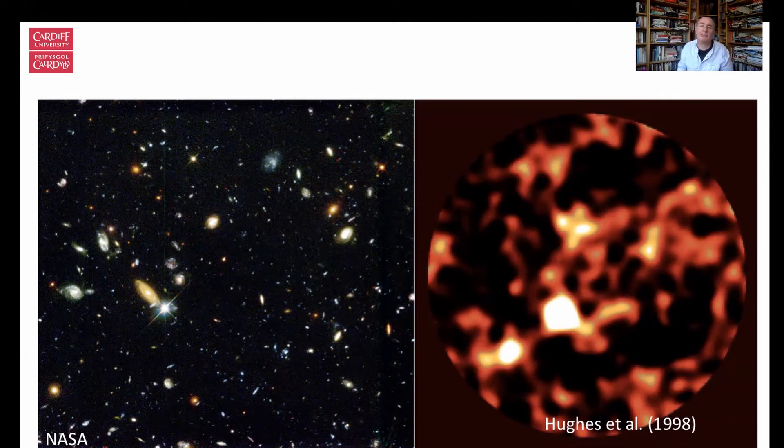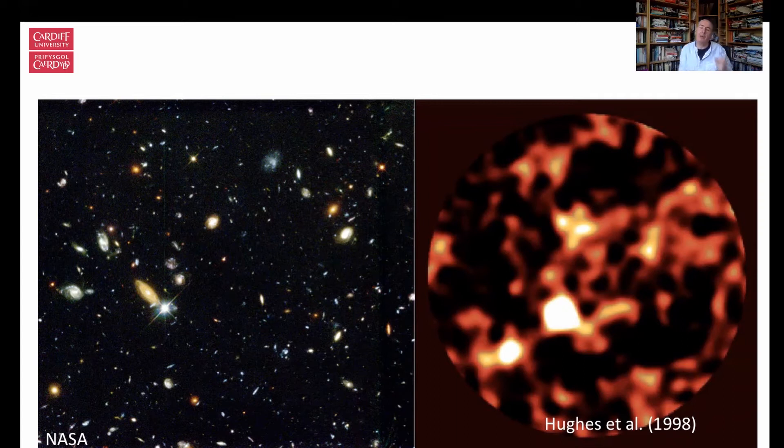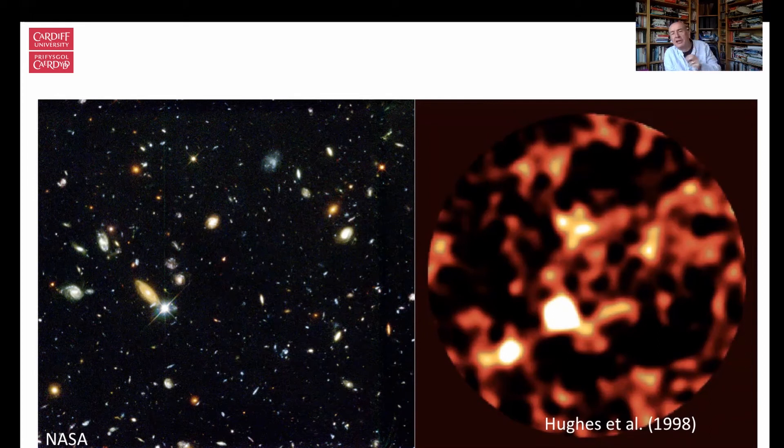Now, we've done loads of observations of these things since, and we now know that what we're seeing on the sub-millimeter image are galaxies 10 to 12 billion years back in time, incredibly luminous, so they're forming stars at a rate roughly a thousand times greater than our own galaxy. And these things have all the properties that we expected for proto-ellipticals. So this SCUBA survey, this survey with this first sub-millimeter camera, basically solved the mystery of the missing proto-elliptical galaxies.